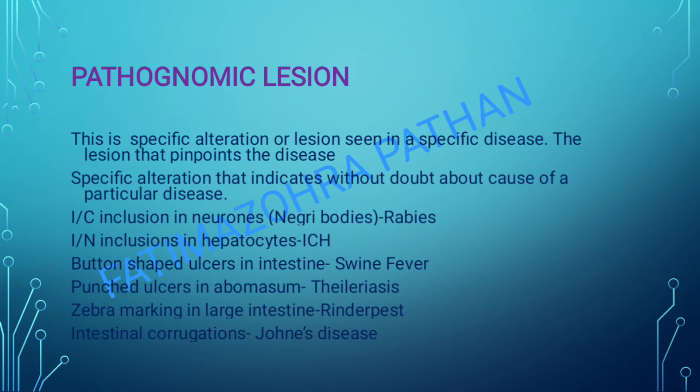Button ulcer in intestine in swine fever, punched-out ulcer in abomasum in theileriasis. Zebra marking — yeh bhi bahut commonly poocha jaata hai — zebra marking in intestine in rinderpest. Aapko yeh bhi yaad rakhna hai ki kaun se organ mein dekhne ko milta hai, kyunki MCQ mein ulat-pulat karke confused kar sakte hai. Next — intestinal corrugation in Johne's disease.